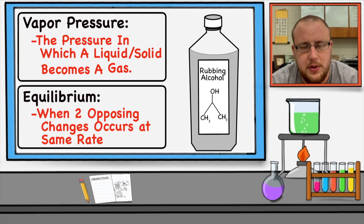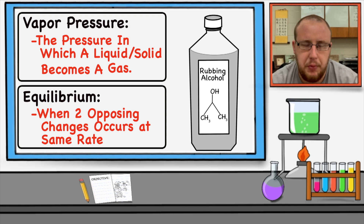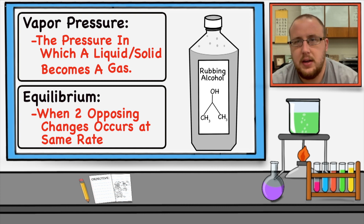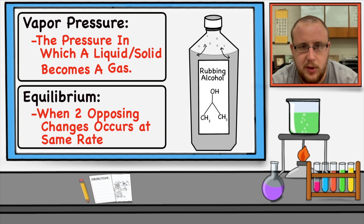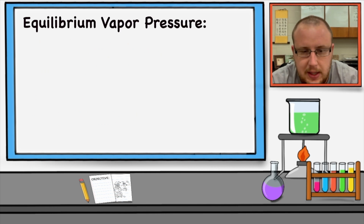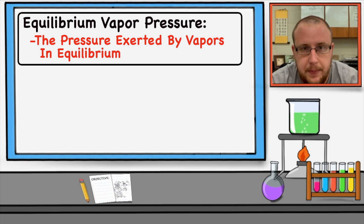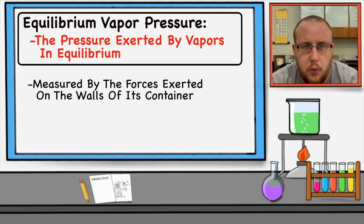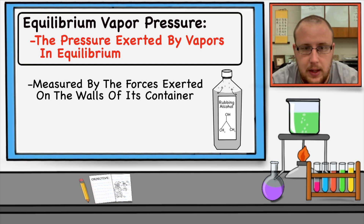A common example of this is rubbing alcohol. If I have a sealed bottle of rubbing alcohol with no external forces, that rubbing alcohol is going to evaporate. As it evaporates and turns from a liquid to a gas, the remaining gas in that bottle turns back from a gas to a liquid — they go back and forth at the same rate. That's why the bottle doesn't explode from too much gas. With this understanding, we can talk about equilibrium vapor pressure, which is the pressure exerted by vapors in equilibrium. This pressure is measured by the forces exerted on the walls of the container.